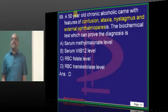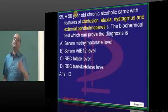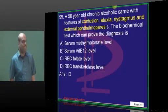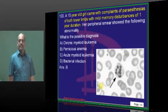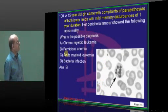Confusion, ataxia, nystagmus — alcoholic — what is your answer? Thiamine deficiency, hence RBC transketolase levels.